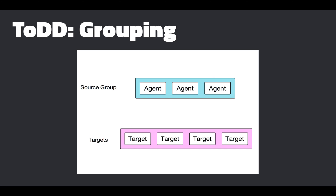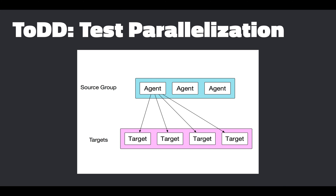I briefly mentioned grouping within TODD, so let's define what that means. All tests are run using groups within TODD, so before you can run tests you need to write rules that place agents into groups. In the visual shown here, we have agents placed in a blue group based on rules like IP subnet or hostname. When we run a test, we tell TODD that the source is this blue group of agents and also pass in a list of targets — typically IP addresses shown in purple. Each agent spins up parallel threads for running tests simultaneously against all targets, and when finished, reports data back to the server in aggregate. All agents in the source group are doing this simultaneously — so all agents are testing all targets all at once.